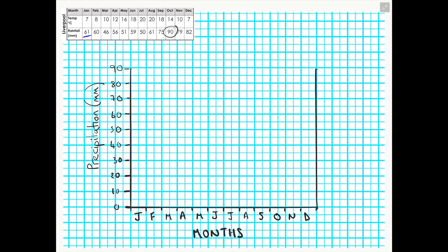We can now begin by plotting our data onto our climate graph for precipitation. For the first month, January, the data tells us that Liverpool received 61 millimeters of precipitation on average during that month over a 30-year period.